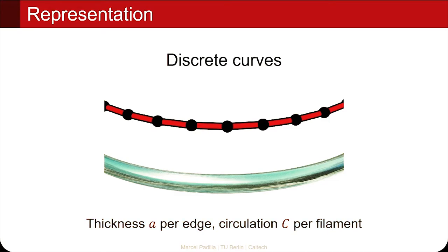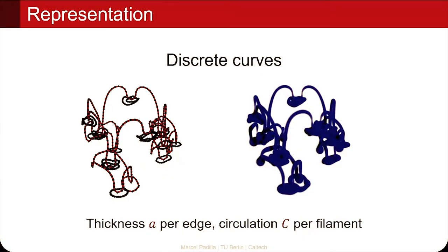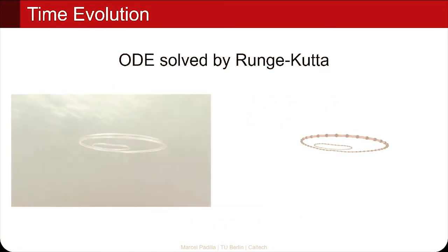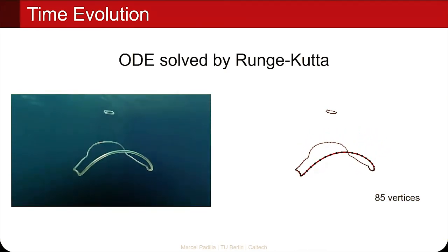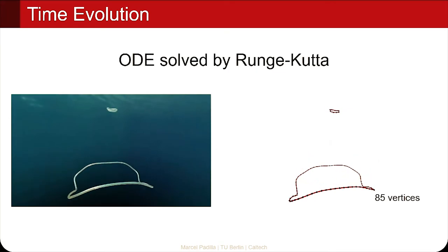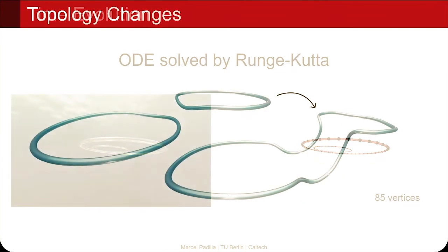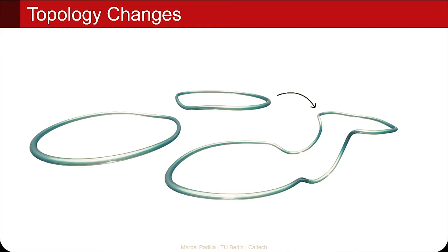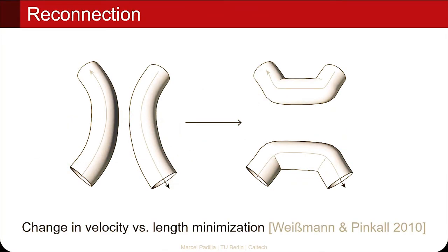Now we can move on and implement these equations. We discretize the vortex filaments as polygonal curves, with thickness stored per edge and circulation stored per filament. The entire simulation is run by fourth-order Runge-Kutta, which is efficient because we only have curves and only need to sample some points on the curve. For topological changes such as bubble ring reconnection, we rely on the filament reconnection model by Weismann and Pinkerl (2010), which compares the change in the velocity field with the change in the length of filament, and reconnects if a given ratio is met.